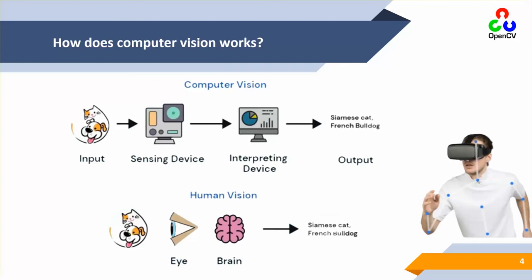Since the human vision system is the best, the goal is to copy it into computing devices. However, this copying is not simple because the human vision system is very complex — it has many senses, many nerves, and many processors given to us by nature. Replicating this in computing requires a lot of processing power, memory, and processing devices.